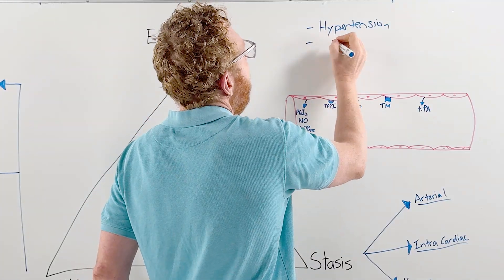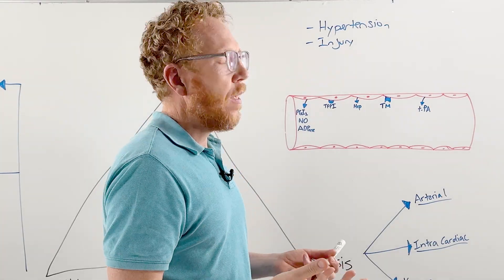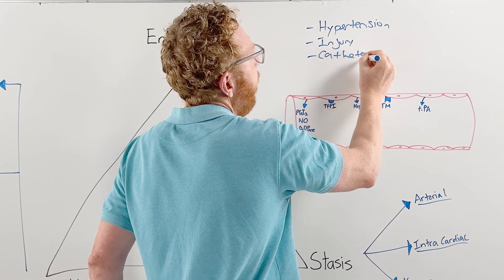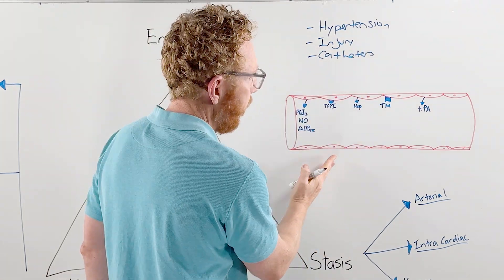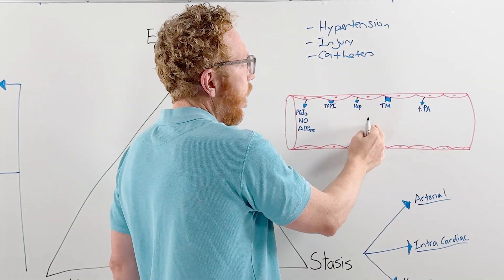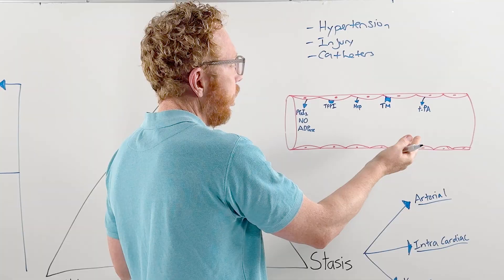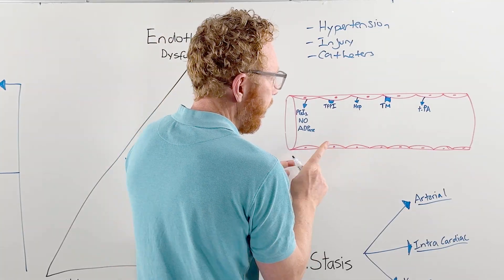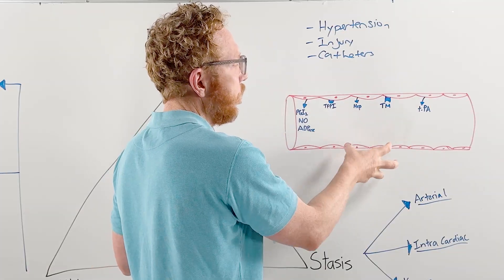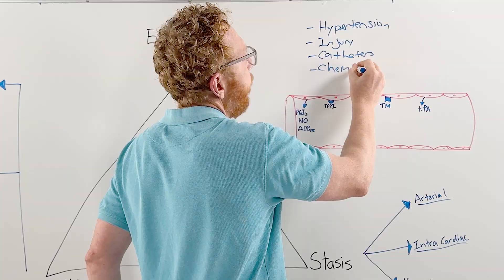Another cause would be injury to a blood vessel through trauma, surgery, or even catheters. That would be more for venous. If a person had a catheter to take blood out or allow medicines to be put in for long periods of time, that catheter sitting in the blood vessel will injure the endothelium, reducing these chemicals, making clot formation more likely.